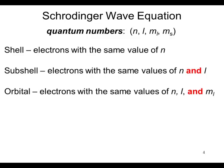Quantum numbers n, l, m sub l, and m sub s are used to quantify different shapes associated with the electron in an atom. The shell is the electrons with the same value of n. The subshells are the electrons with the same values of n and l. And an orbital are electrons with the same values of n, l, and m sub l.